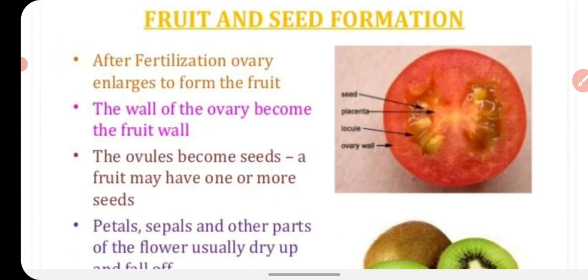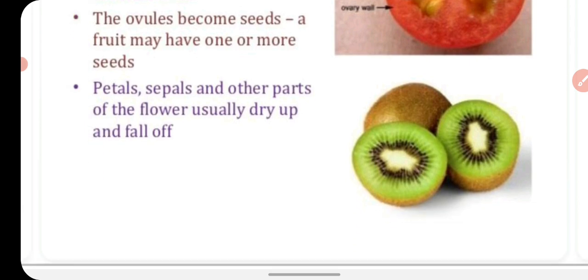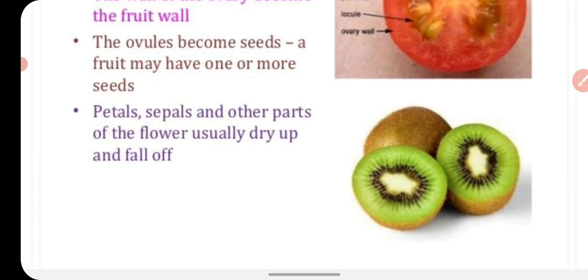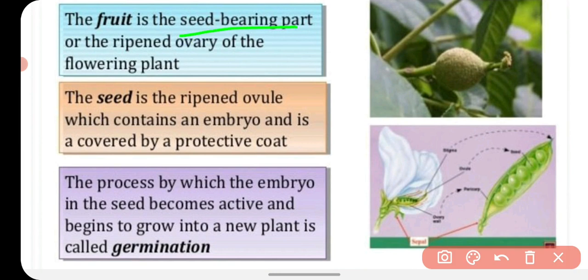After fertilization, the ovary enlarges to form a fruit. The wall of the ovary becomes the fruit wall, and the ovules become seeds. A fruit may have one or more seeds. The fruit is the seed-bearing part, or the ripened ovary, of the flowering plant. The seed is the ripened ovule, which contains an embryo and is covered by a protective coat.